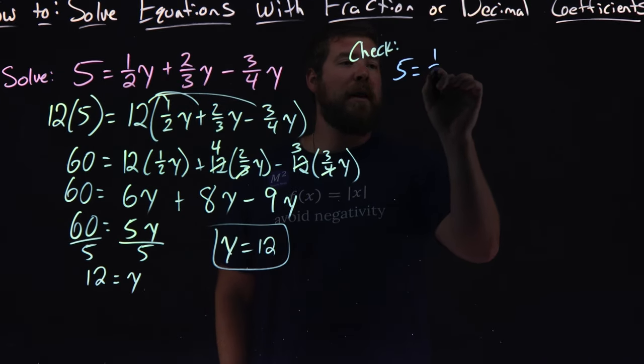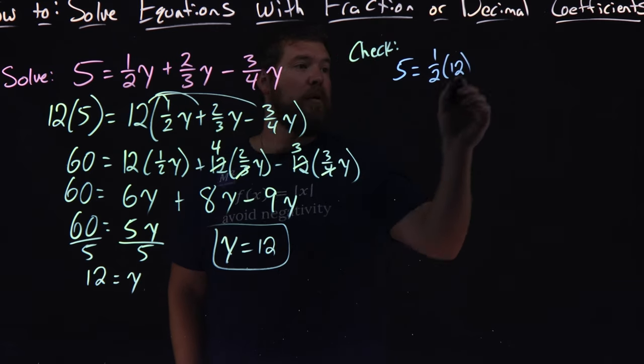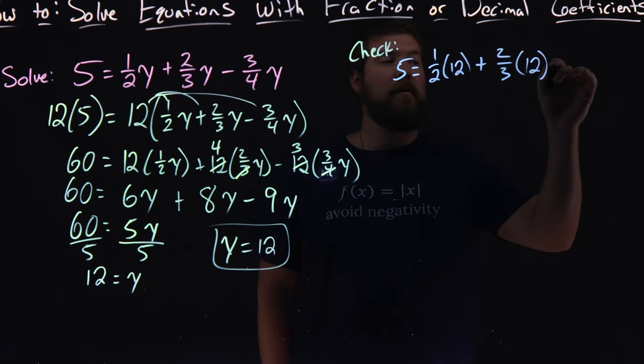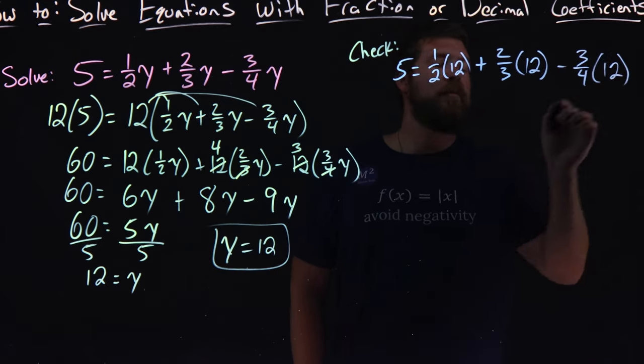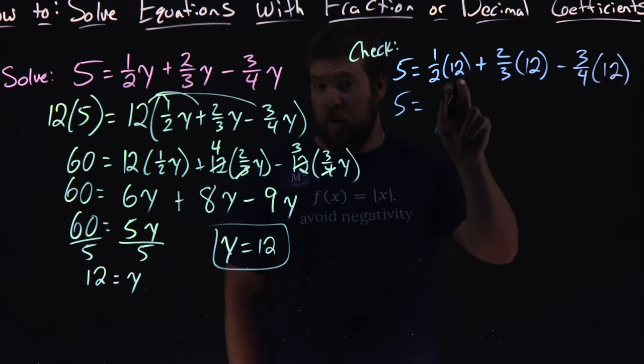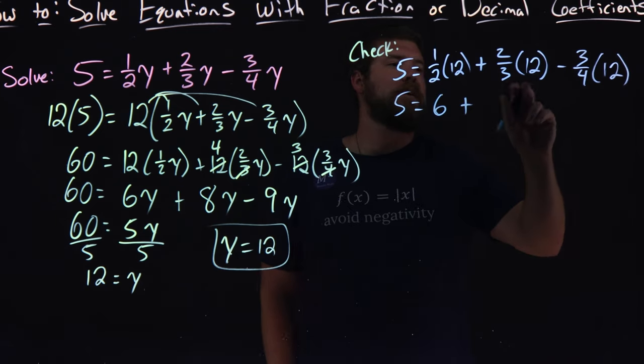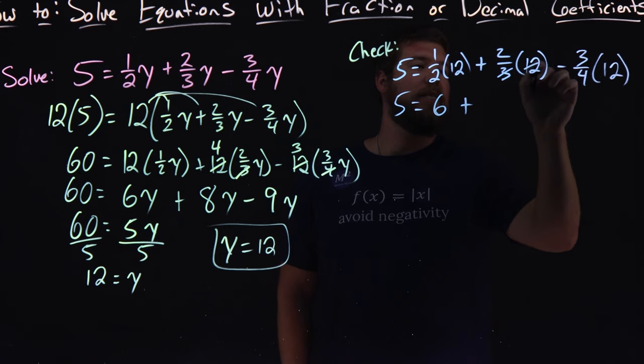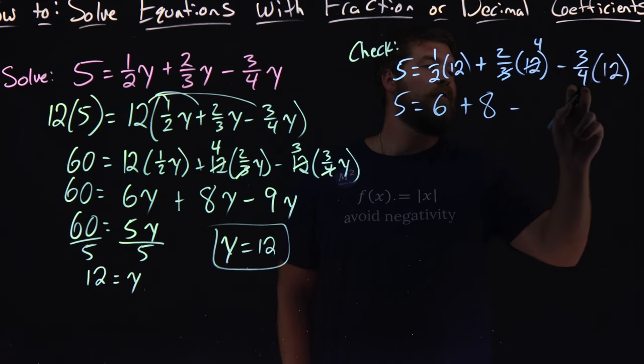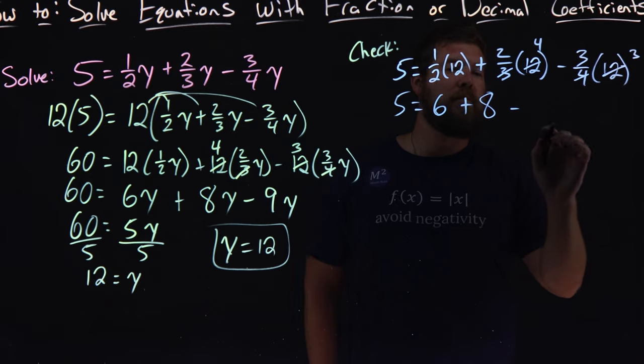So, we have 5 equals 1 half times 12, that y value, plus 2 thirds times 12 minus 3 fourths times 12. Now, let's simplify this. 5 equals 1 half times 12, which is 6, plus 2 thirds times 12, 3 and the 12 cancel. We've got a 4 here. 2 times 4 is 8. And then minus 3 fourths times 12, 4 and 12 cancel there, put a 3, 3 times 3 is 9.